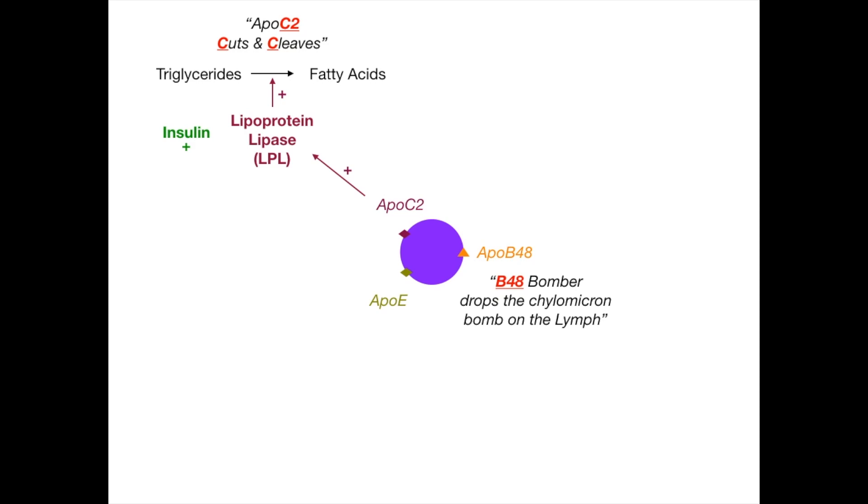But this is a very complex topic in terms of how Apo E works in this pathway. So far we've talked about chylomicrons, but ultimately what happens is that chylomicrons and all of the other cholesterol pieces here, which are known as LDL, VLDL, IDL.